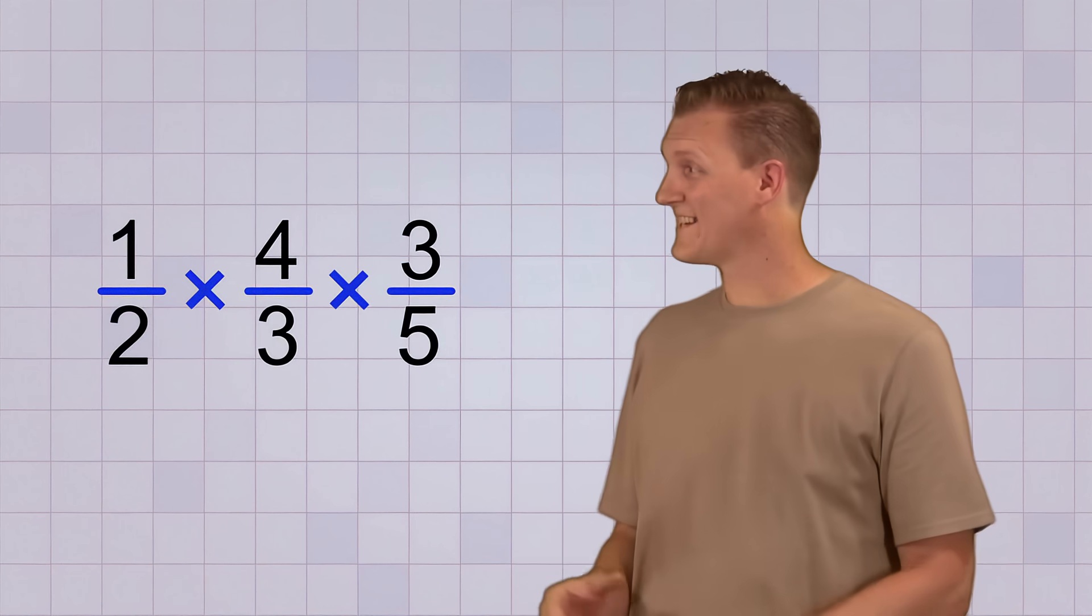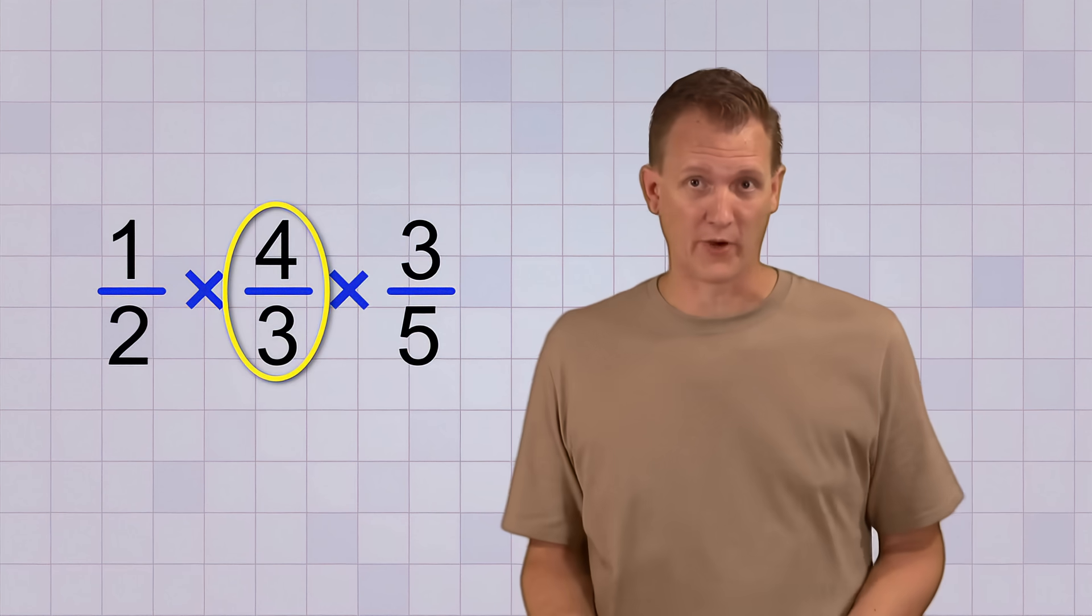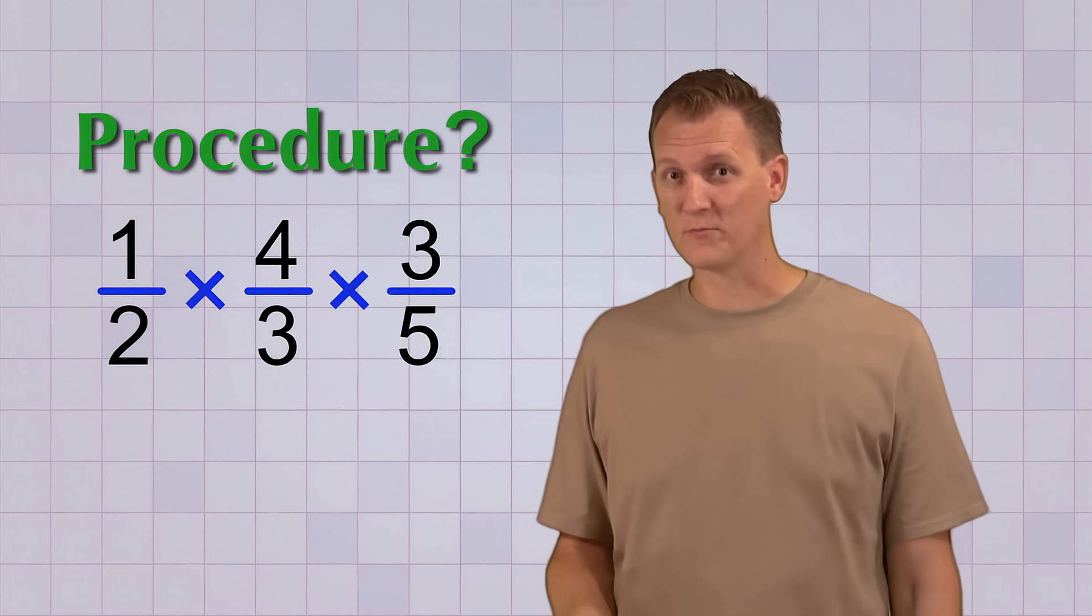Wait a minute! This has three fractions multiplied together, and the middle one looks like an improper fraction because its top number is bigger than its bottom number. Does our procedure work for this problem, too?